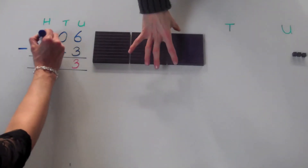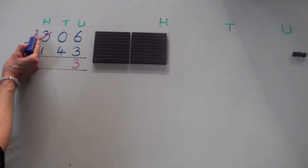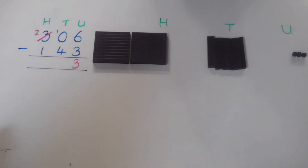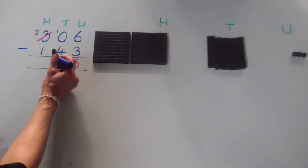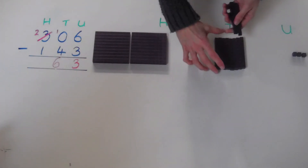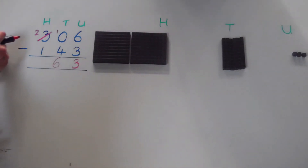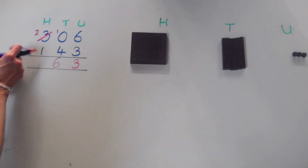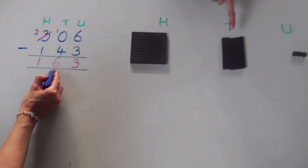If I exchange a hundred from the hundreds column, our three hundred becomes two hundred. And in my tens column, I now have ten tens. So my tens column looks like ten. I can subtract four tens from ten tens, and that leaves me with six tens. Now I have two hundred take away one hundred, and that is one hundred. Giving us an answer of one hundred and sixty-three.